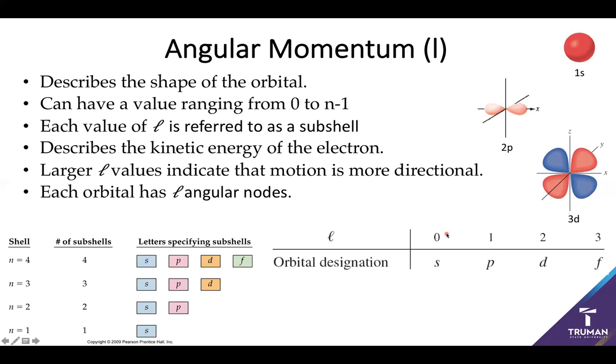We can illustrate how these work using quantum numbers. If l equals one, there's only one possible subshell because there's only one possible l value, zero. We call orbitals with an l of zero the s subshell. If n equals two, I have two different subshells: l of zero or one. If l equals one, we call this the p subshell.